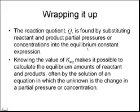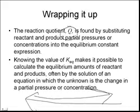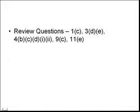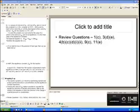To sum up: the reaction quotient Q uses the same equilibrium equation but with initial values instead of equilibrium values. By comparing Q to Keq, we can determine whether the reaction will proceed to the right — forming products — or to the left — forming reactants. We have a few practice questions on this, so we'll look at those tomorrow in class. Thanks for watching.